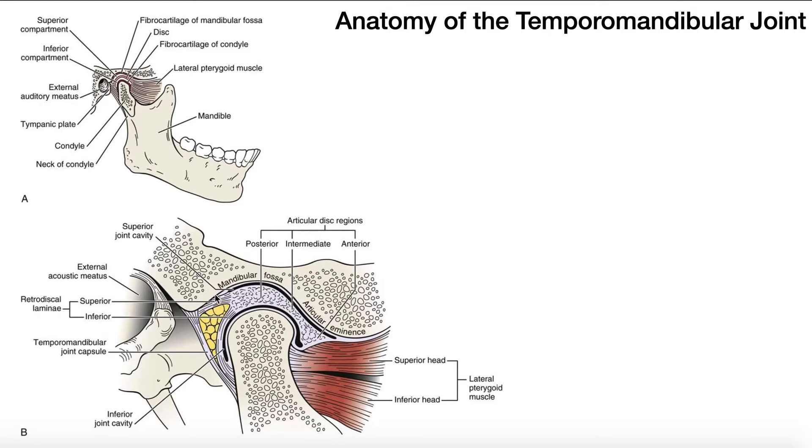Posteriorly, a part of the disc is what we call some retrodiscal tissue. And this tissue really just allows the disc to attach posteriorly, both on the posterior edge of the mandibular fossa and then also here on the mandibular condyle. So this is the retrodiscal tissue, sometimes called retrodiscal lamina.